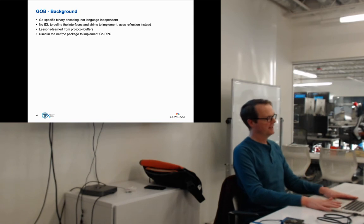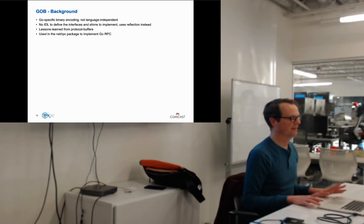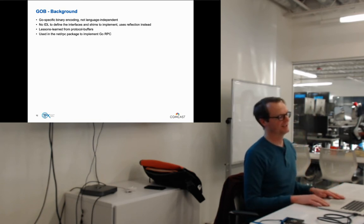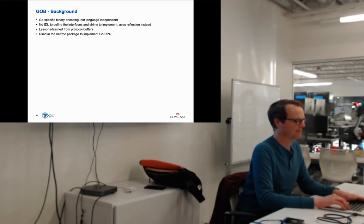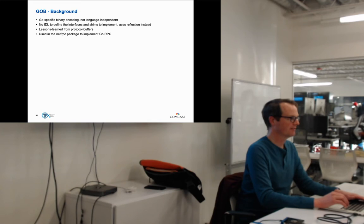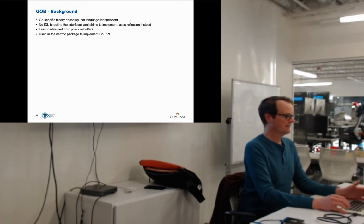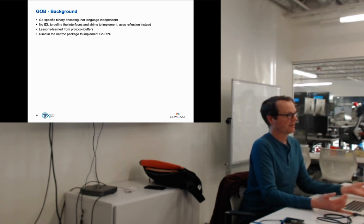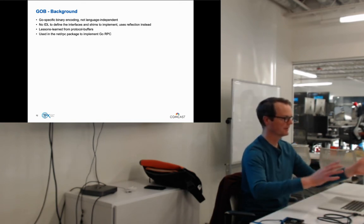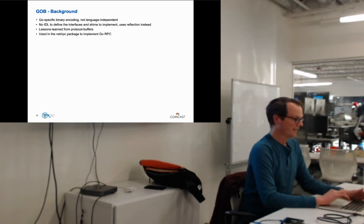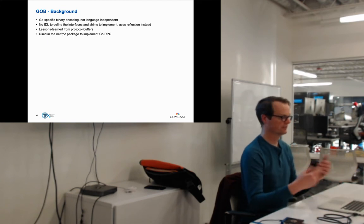GOB is a first-class citizen built into the language — all of Go understands it. It is a Go-specific binary encoding and is not language-independent. There is a very old Python project on GitHub that claims to decode GOB structures, but I'm not sure I'd use that in production. There's no IDL to generate interfaces and stubs, unlike Avro, Flatbuffers, Protobufs, and Thrift — you can just marshal it.